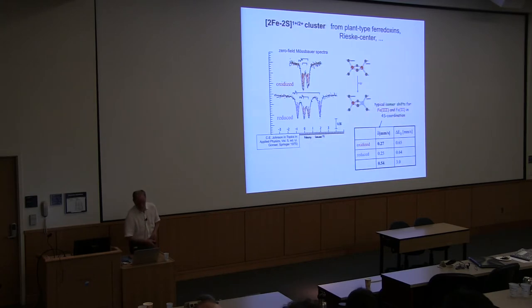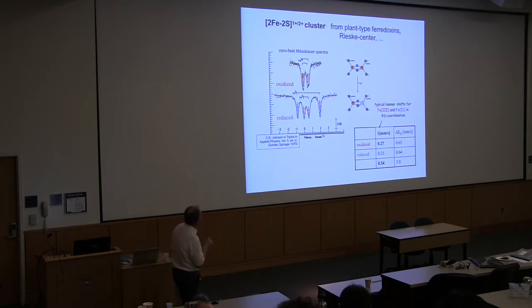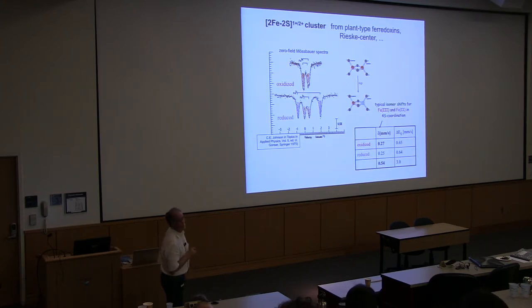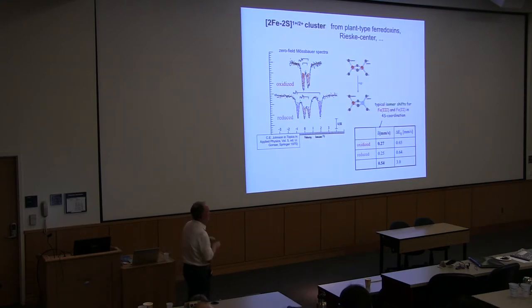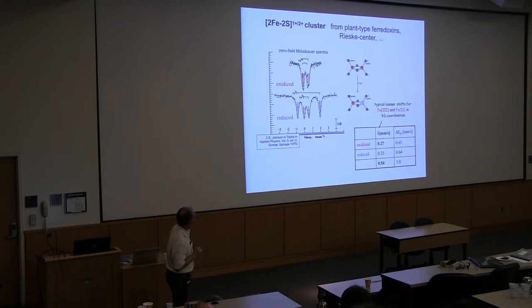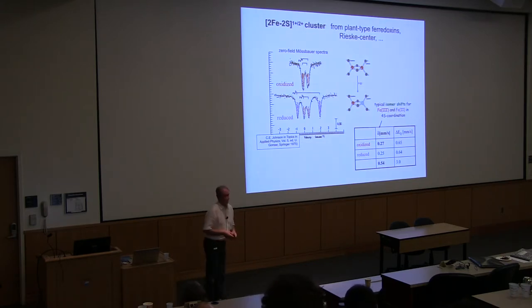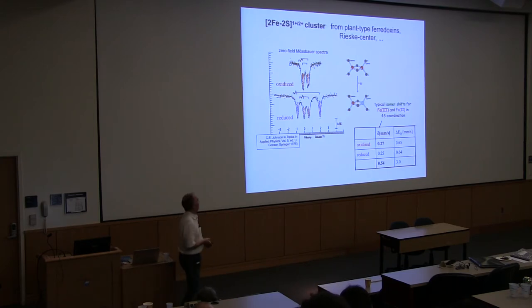A more biochemical example: iron-sulfur Mössbauer spectra. The dinuclear iron-sulfur clusters have typical Mössbauer patterns that were already measured in 1975 by Johnson. The Mössbauer spectrum of an oxidized dinuclear iron-sulfur cluster shows an isomer shift of 0.27, typical for full coordination with sulfur. When the system gets reduced, the Mössbauer spectrum is a superposition of the former doublet plus a new doublet with a much higher isomer shift of 0.54 — that is the difference between iron(II) and iron(III) in sulfur-coordinated systems.